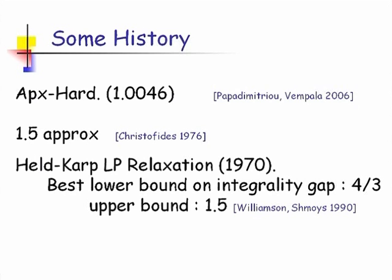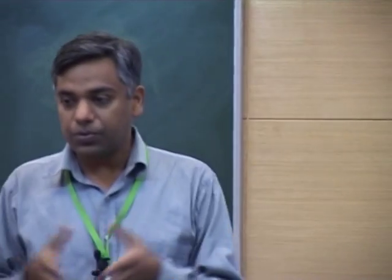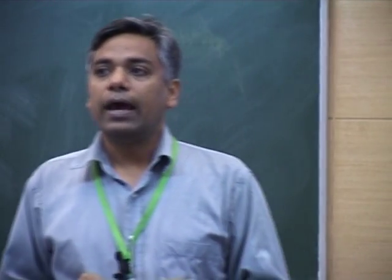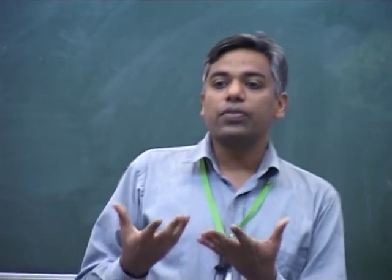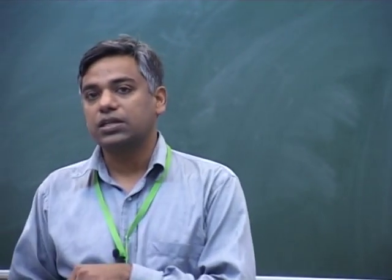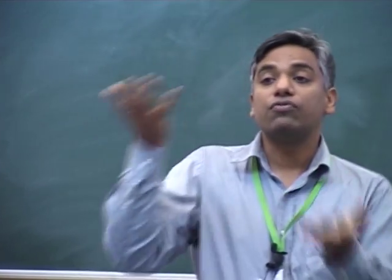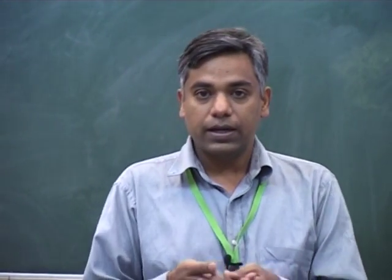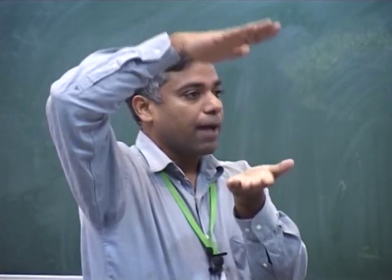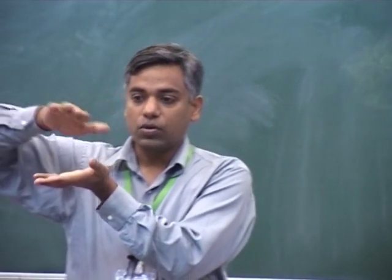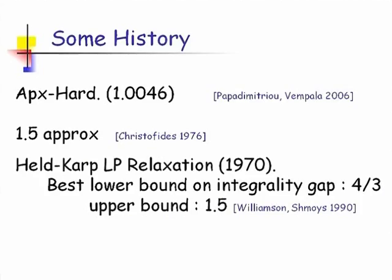Related to this is the Held-Karp relaxation, which we'll also be referring to. This can be thought of as a linear programming formulation for the problem, and it gives a lower bound on the optimum value. It's conjectured that the gap between the optimum value and this lower bound is at most 4/3. This is an old conjecture and all we know about this gap is that it is at most 1.5.